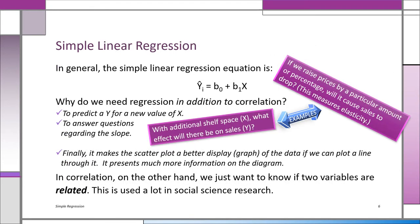The regression equation is y-hat_i = b0 + b1*x_i. Don't confuse y-hat — the points on the line — with the input data, which we call y_i without the hat. Why do we need regression in addition to correlation? Correlation just gives you r, a number from plus one to minus one. But if you want to actually predict y for a different value of x, you need regression.